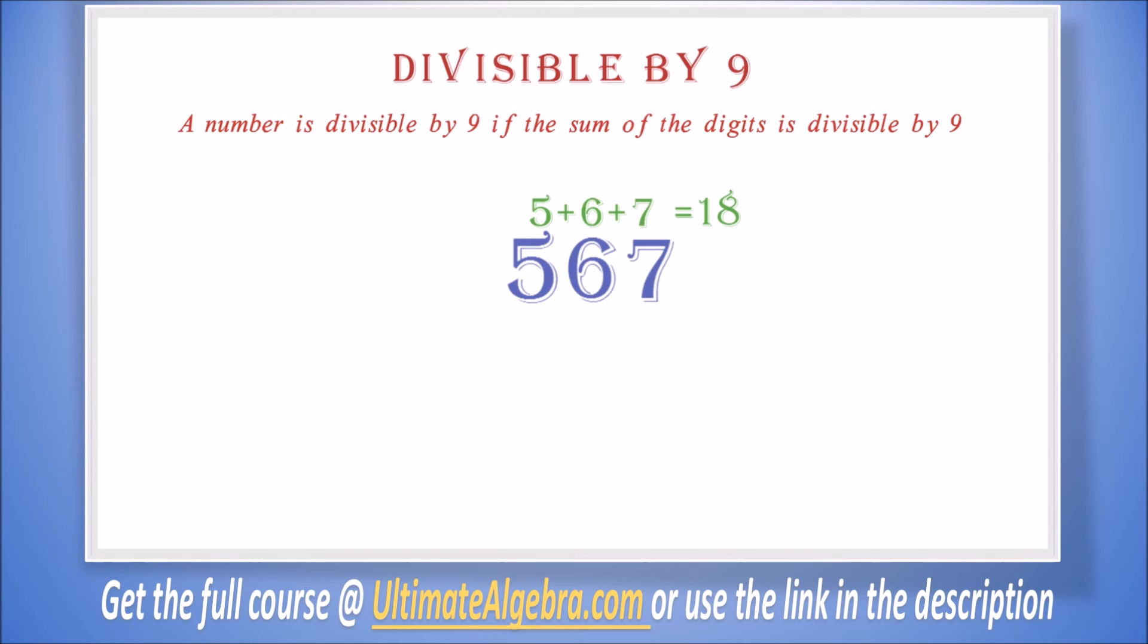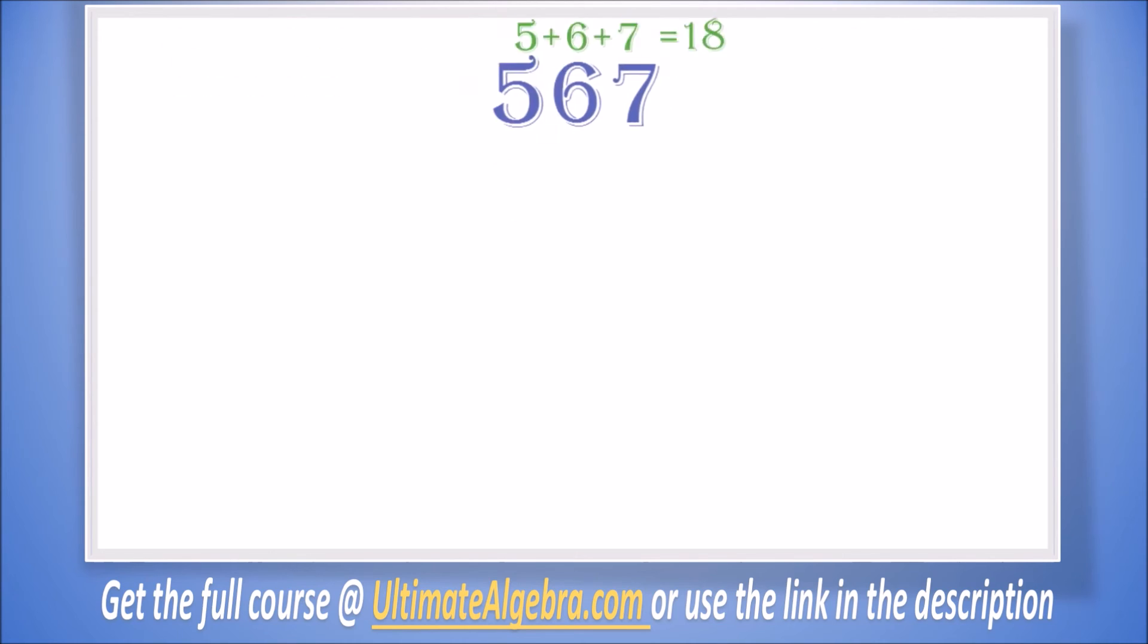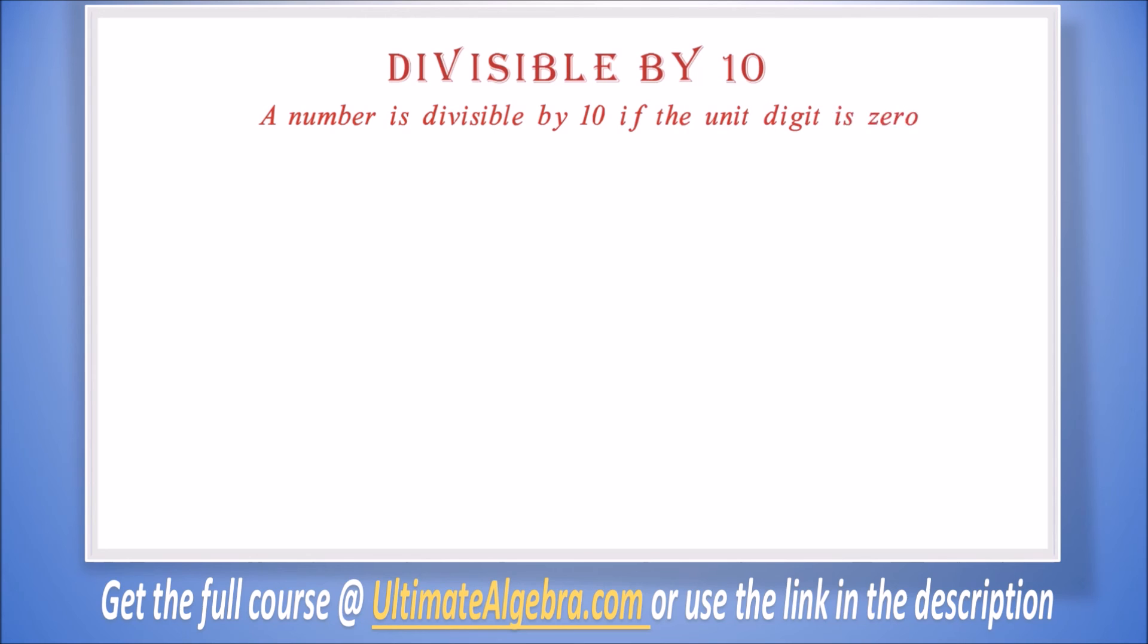Divisible by 10: A number is divisible by 10 if the unit digit is 0. This is pretty straightforward. So 130 is divisible by 10 because it has a zero as the unit value.